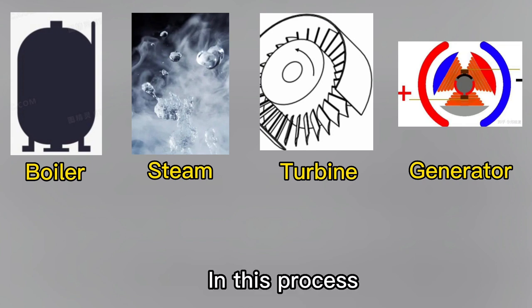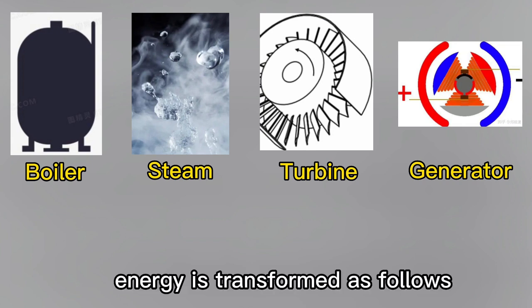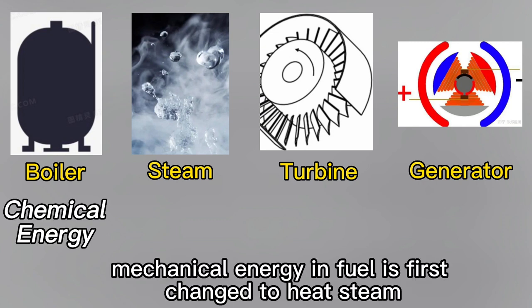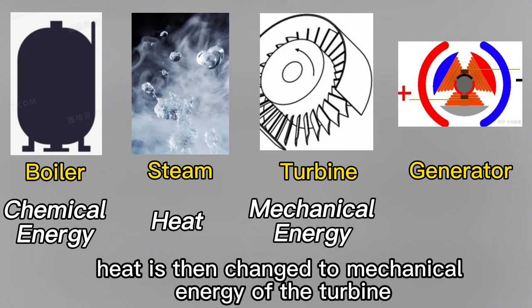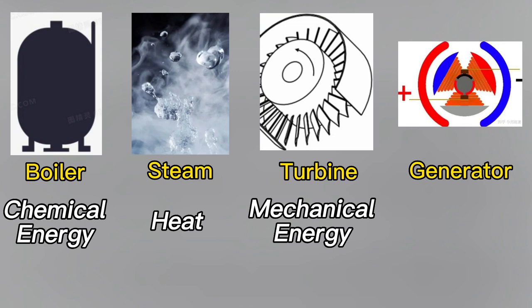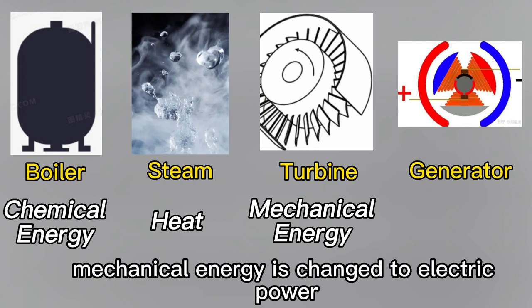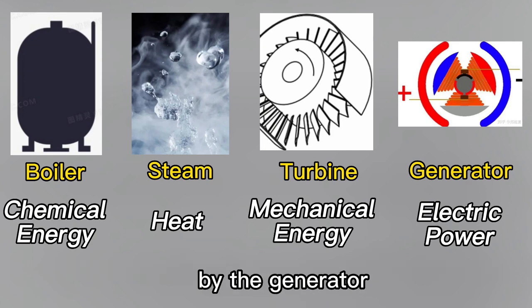In this process, energy is transformed as follows. The chemical energy in fuel is first changed to heat of steam. Heat is then changed to mechanical energy of the turbine. At last, mechanical energy is changed to electrical power by the generator.